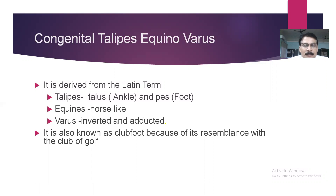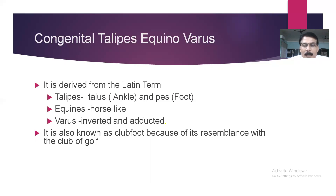The word is a Latin term. Talipes means talus, which means ankle. Pes means foot, and equino means horse. So talipes equinovarus basically refers to a horse shoe shape in the ankle and foot. It is also known as club foot because it gives a gross resemblance with the shape of a club.